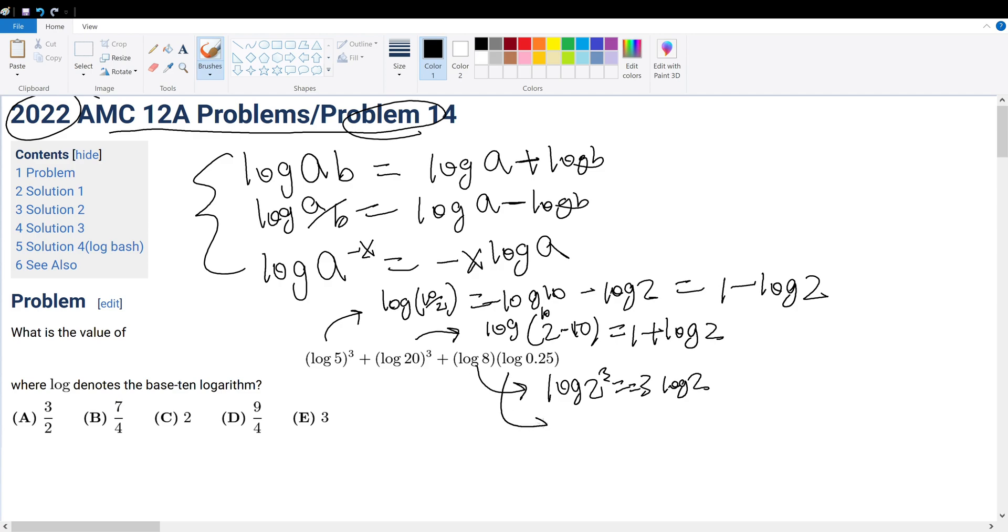Log 0.25 could be rewritten as 1 over 4, which could be rewritten as log 2 to the negative 2, which is negative 2 log 2. There we go.